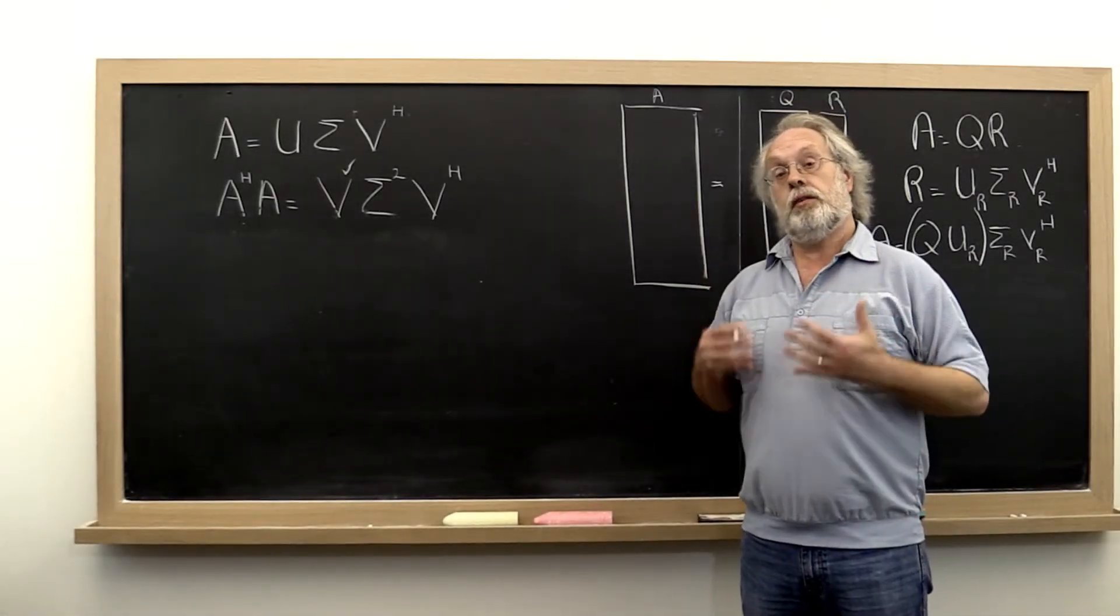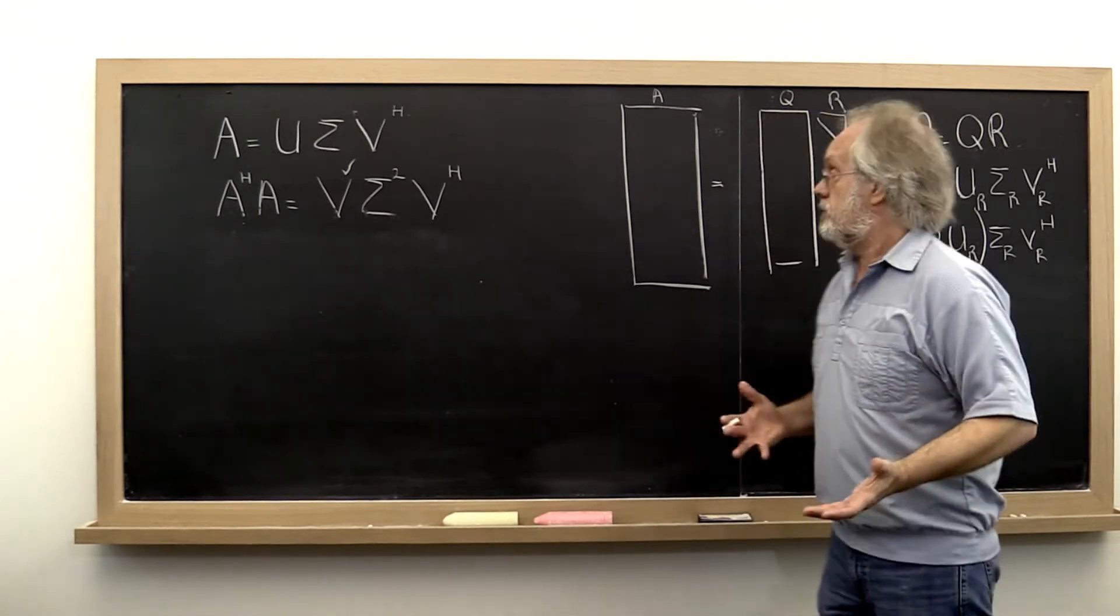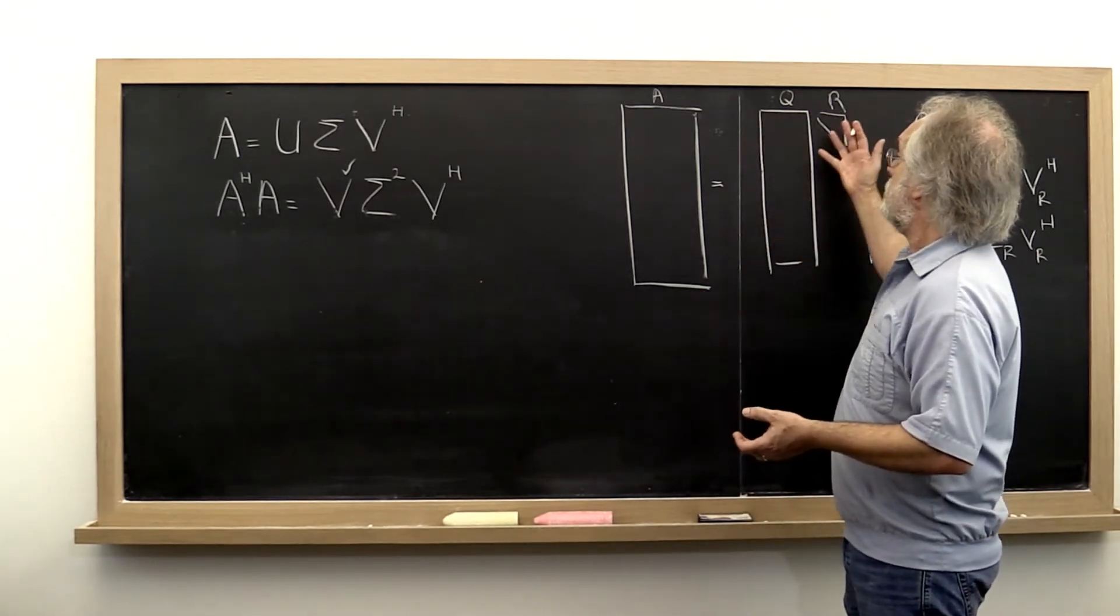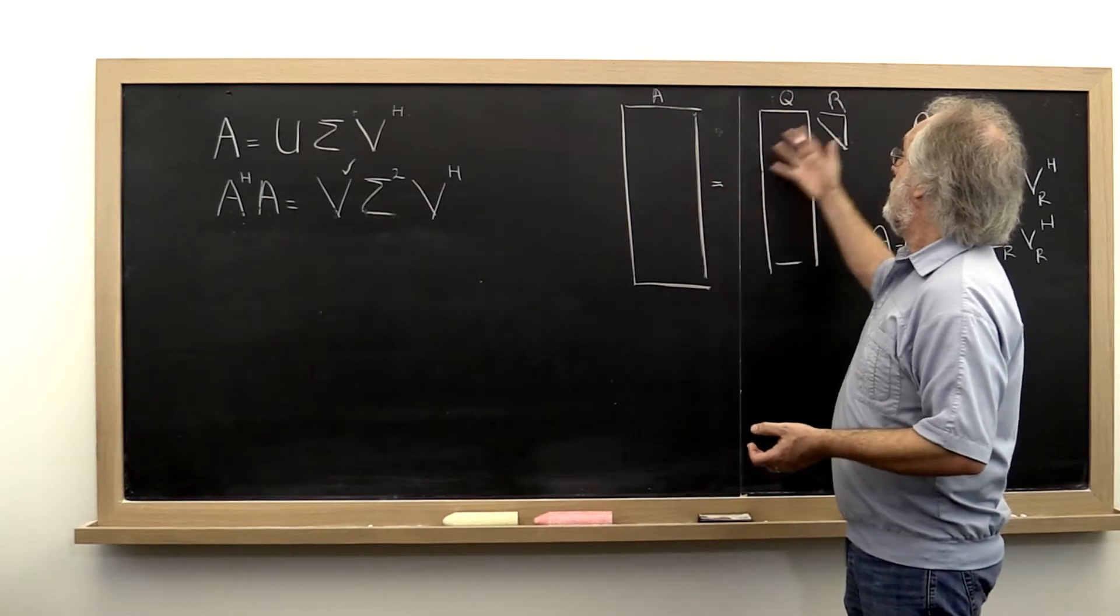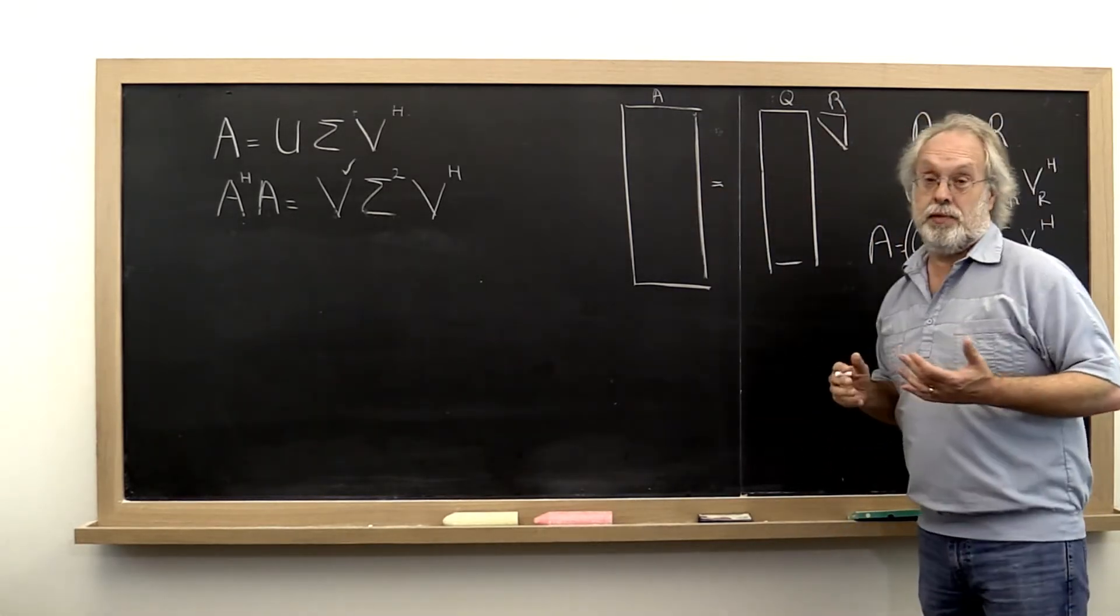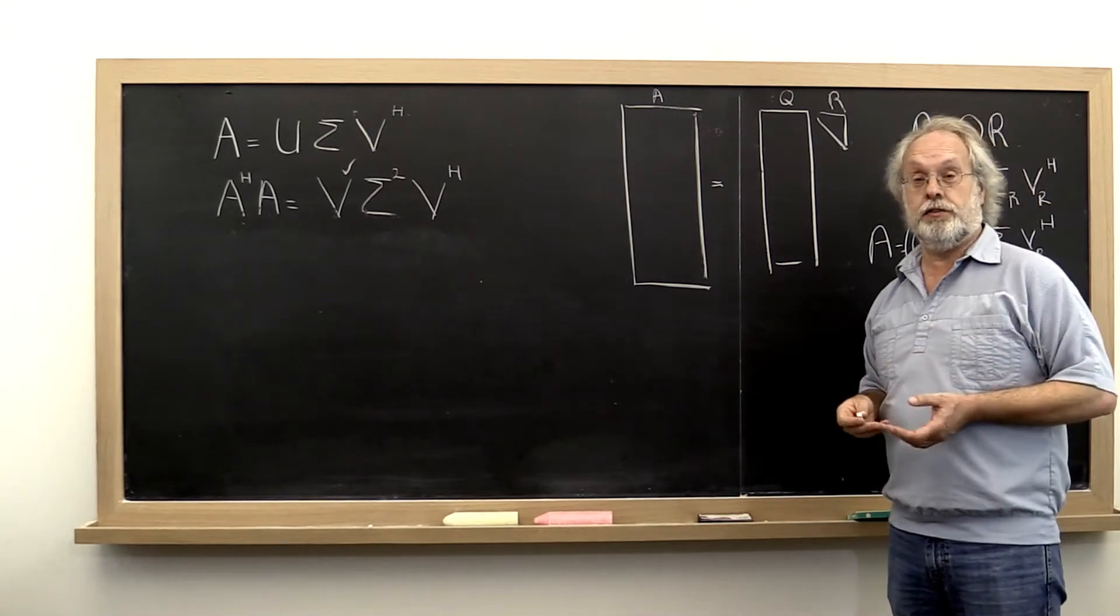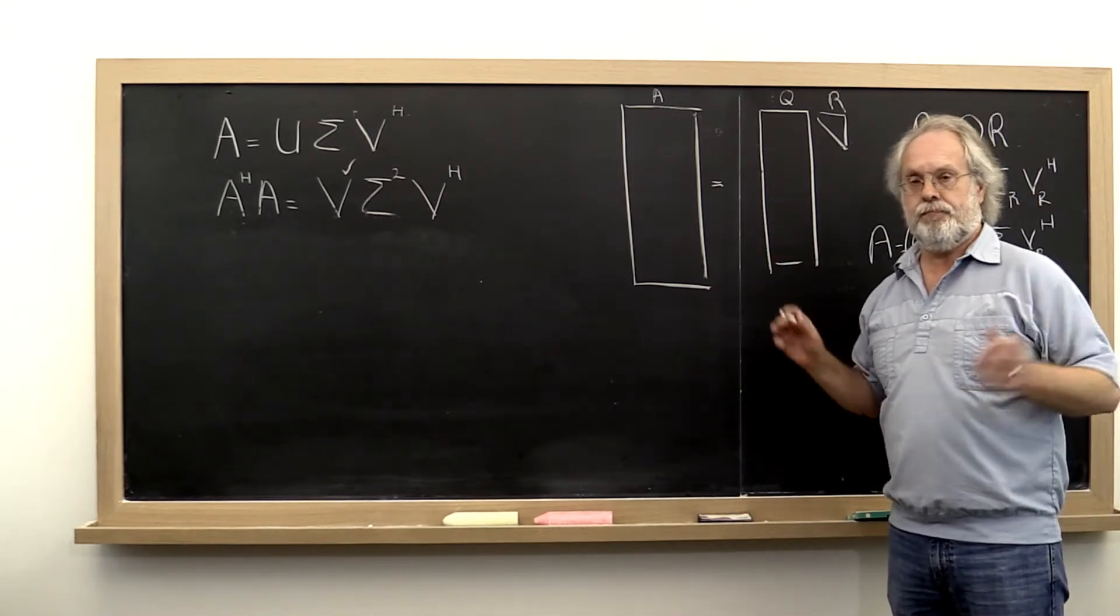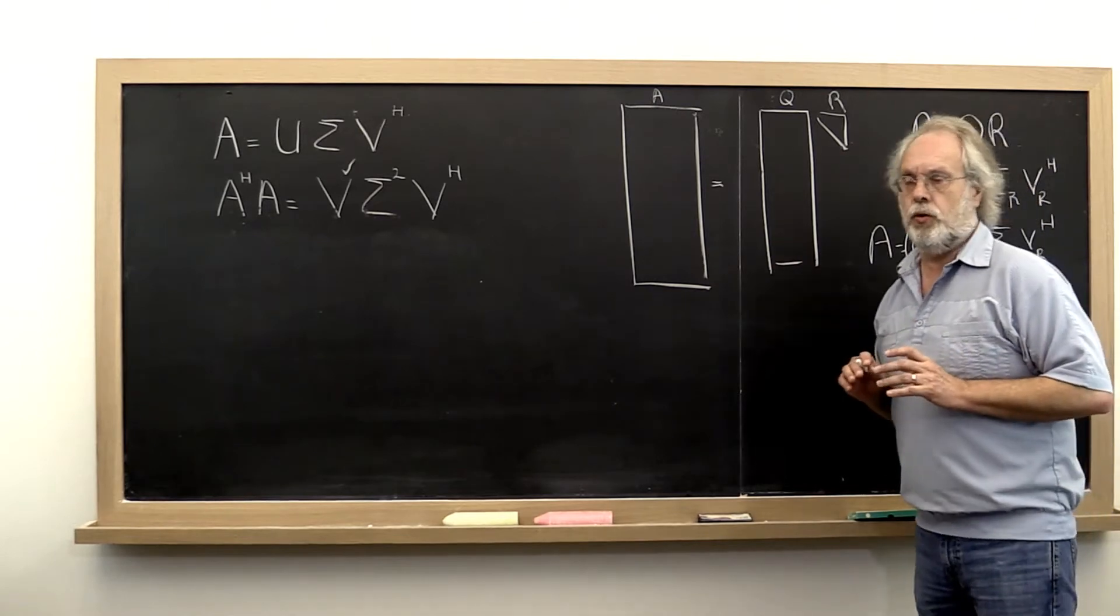So we're now still talking about the strategy. The strategy is first use a QR factorization to make A into, well, it's tempting to say into an upper triangular matrix because maybe we can take advantage of its upper triangular form. But actually that's not going to help us a whole lot.